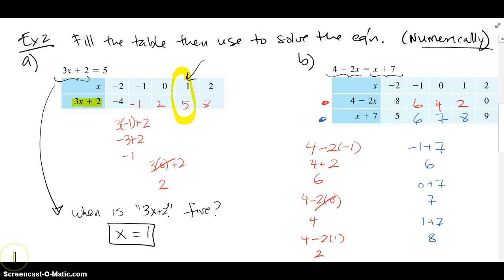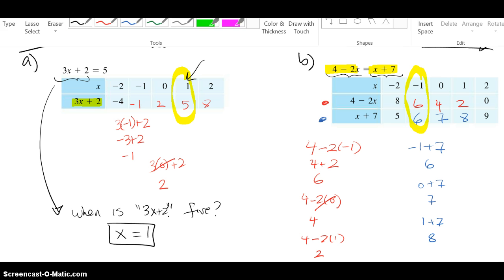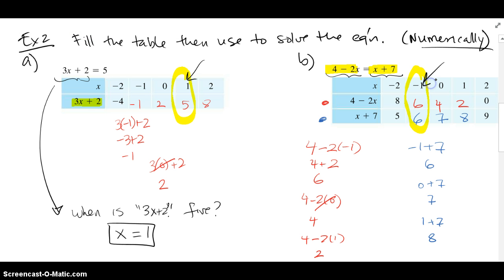Now, again, the original equation says, when is this guy equal to this guy? Well, we computed the red stuff. We computed the blue stuff. When are they equal? It looks like they're both equal right here, which means the answer will be the x value of negative 1. And again, if we were to solve this symbolically and isolate x, we would get x equals negative 1.